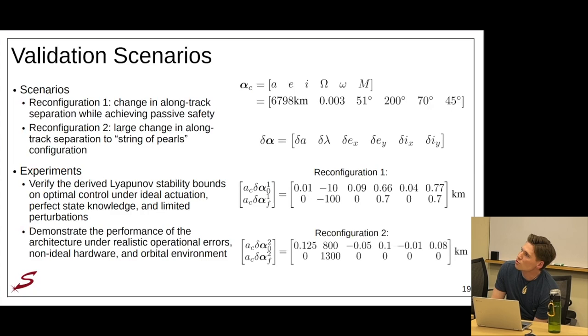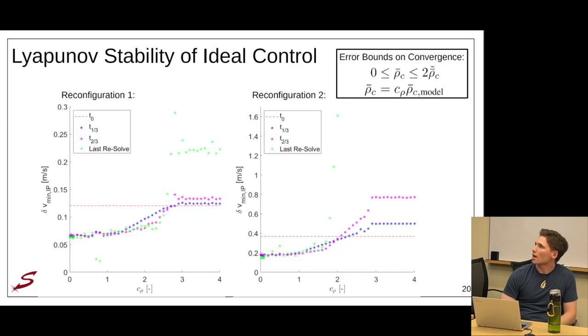To simulate and validate this proposed architecture, I'm considering two validation scenarios. Reconfiguration one, which is a change in along track separation while achieving passive safety through EI vector separation. And reconfiguration two, which is a very large change in along track separation to a string of pearls configuration. The two experiments that I'm going to be looking at are verifying the derived Lyapunov stability bounds on optimal control under ideal actuation, perfect state knowledge, and perturbations limited to just the oblateness of earth and atmospheric drag. I'll then demonstrate the performance of the architecture under realistic operational errors, non-ideal hardware, and a full force orbital environment.